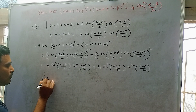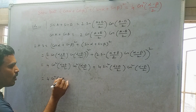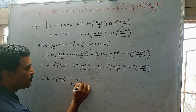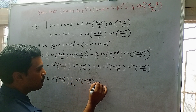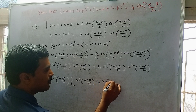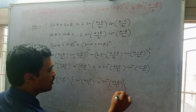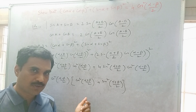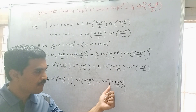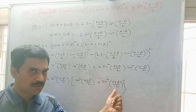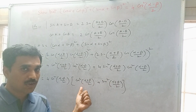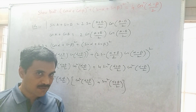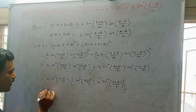Taking 4 and cos²((α − β)/2) out as common factors, we get 4 cos²((α − β)/2) × [cos²((α + β)/2) + sin²((α + β)/2)]. Now (α + β)/2 is also an angle, so treating it as θ, we have sin²θ + cos²θ, which by the fundamental identity of trigonometry equals 1.